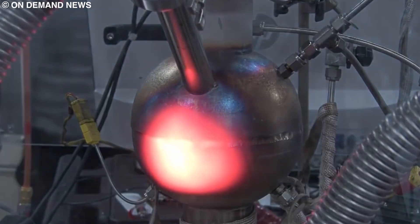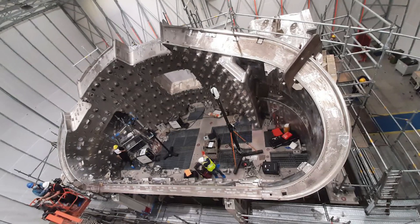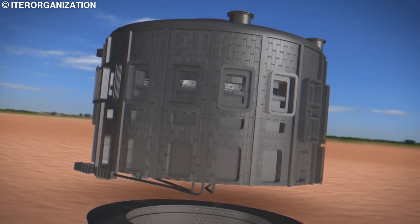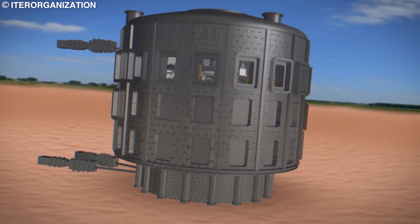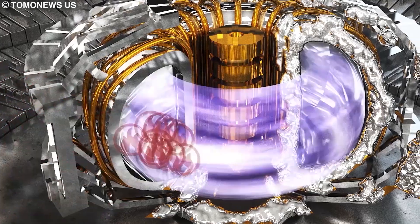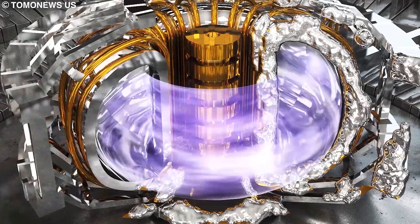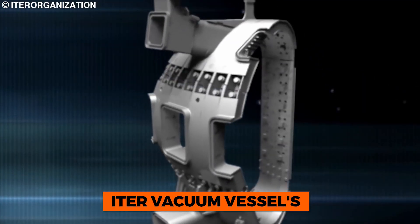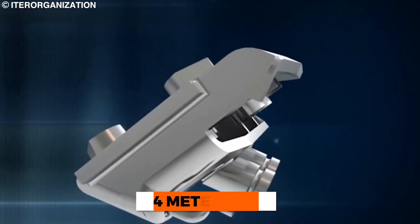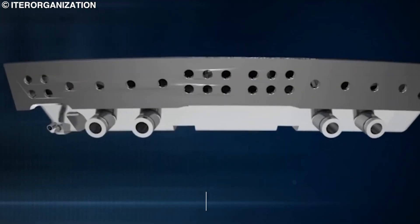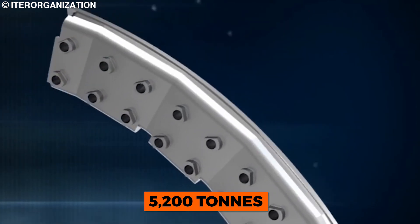All of these systems are designed to support the tokamak's main component, which is the vacuum vessel. This donut-shaped chamber is probably the most important component of the entire ITER assembly. This is where the particles will be forced to fuse together and generate a superheated plasma as a result. The ITER vacuum vessel's outer diameter will measure 19.4 meters across, 11.4 meters high, and weigh approximately 5,200 tons.